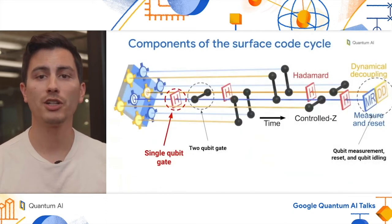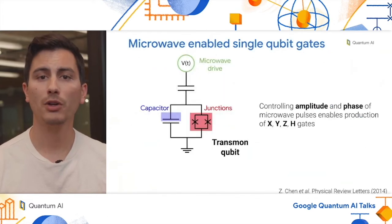Now that we've refreshed ourselves on the transmon, let's dig into our performance improvements. And we'll start with single qubit gates. So as I mentioned, to perform single qubit gates, we deliver microwave pulses, which capacitively couple to the transmon. And by controlling the amplitude and phase of these microwave pulses, we can enable production of x, y, z, or even the Hadamard gate shown in the error correction circuit.